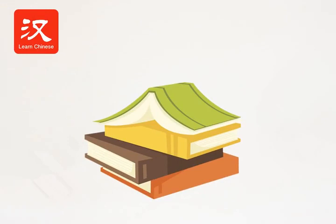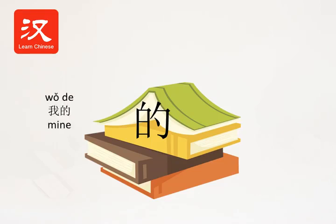Up to now, we have learned a lot of Chinese characters and words. To extend your Chinese vocabulary, let me introduce the mysterious Chinese character 的. So why is it mysterious? Because if you add a noun or pronoun to 的, a new phrase is formed. For instance, 我的 — my.